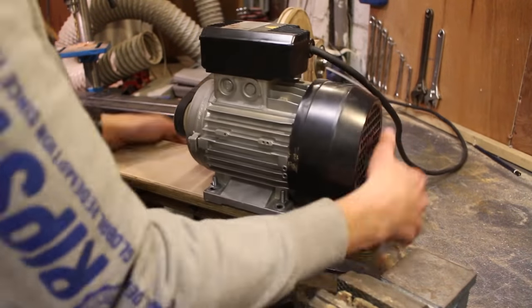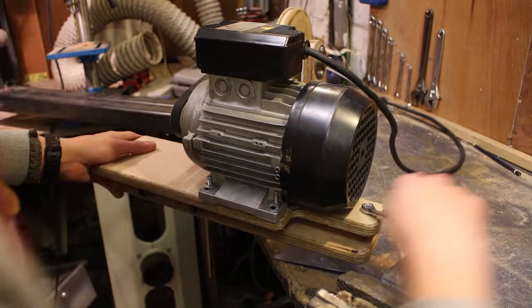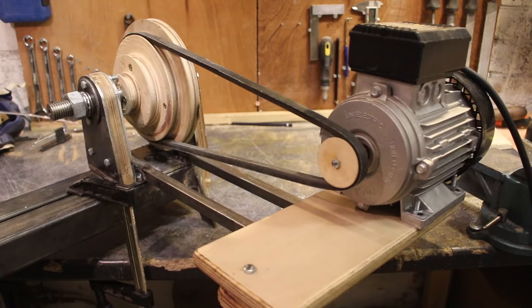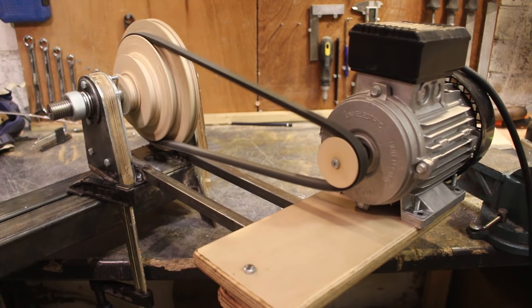Once that's done I can pull the motor out to the desired length and then tighten up the bolts and it works pretty well. Currently at the moment I'm using a V-belt which is way too long and later on in the build I actually buy a shorter V-belt, they're very cheap and change it over and it works much better.